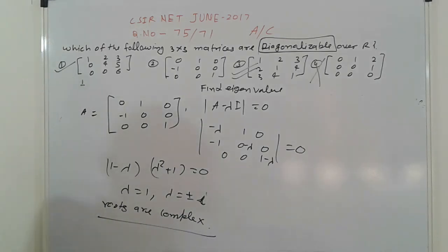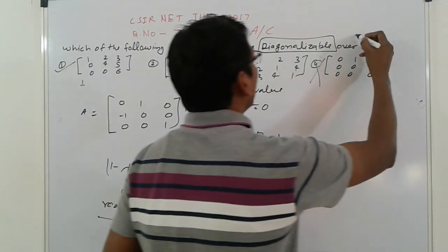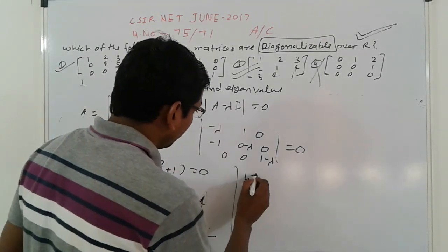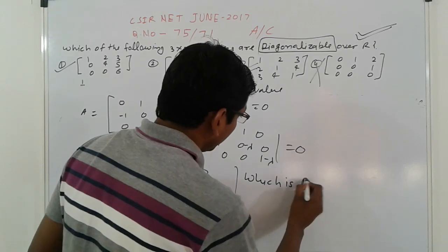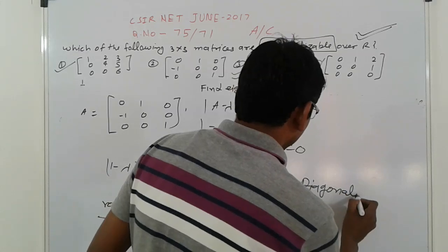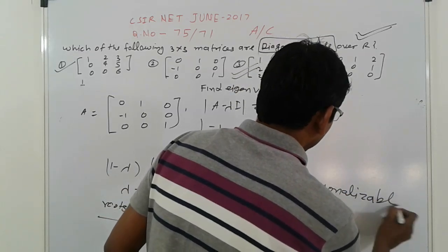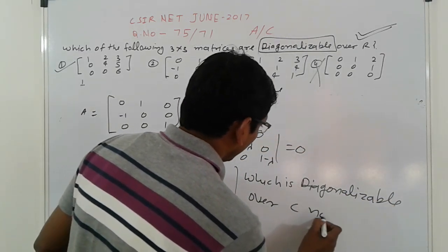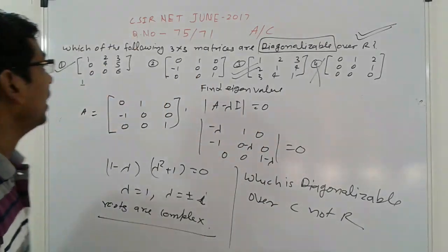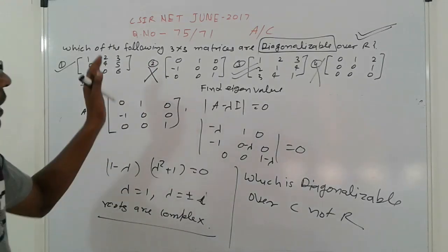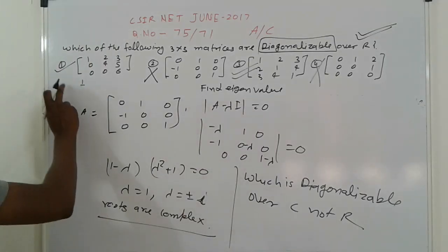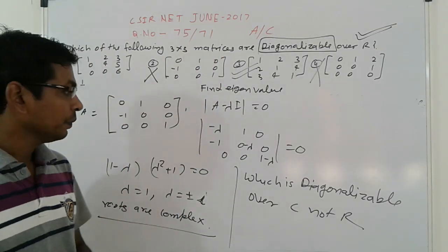The roots are complex. But here it is given over R, not given C. It means it is diagonalizable over C, not R. It means this is also wrong.